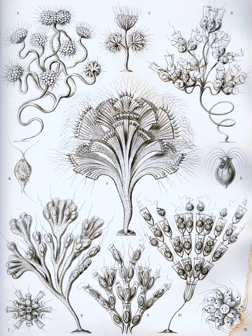A flagellate is a cell or organism with one or more whip-like appendages called flagella. The word flagellate also describes a particular construction, or level of organization, characteristic of many prokaryotes and eukaryotes and their means of motion. The term presently does not imply any specific relationship or classification of the organisms that possess flagellae. However, the term flagellate is included in other terms, such as dinoflagellate and choanoflagellata, which are more formally characterized.